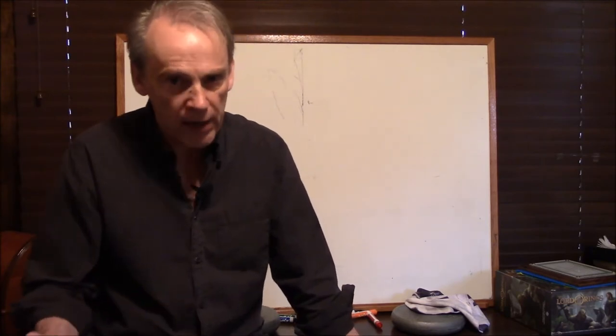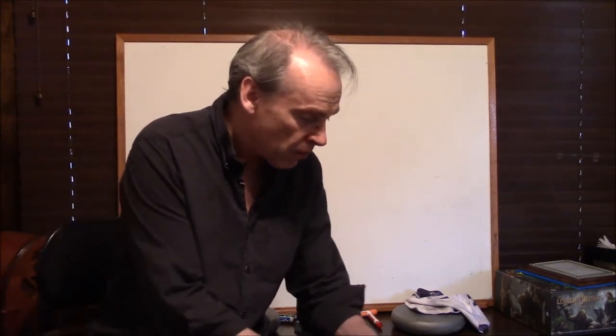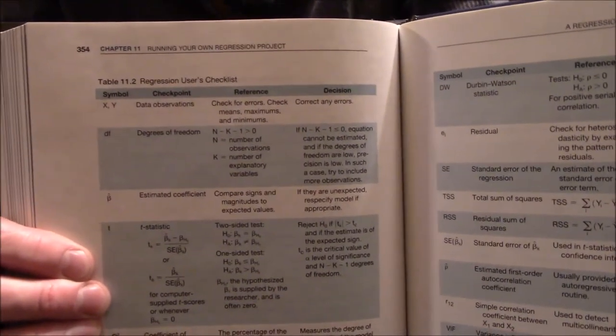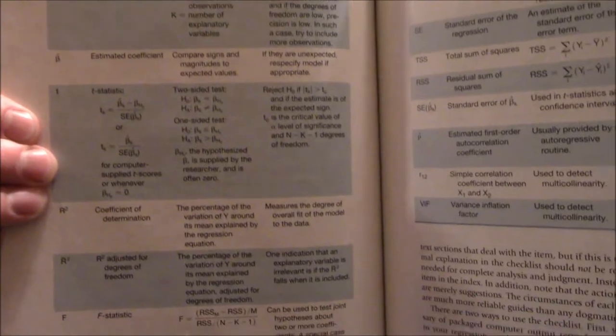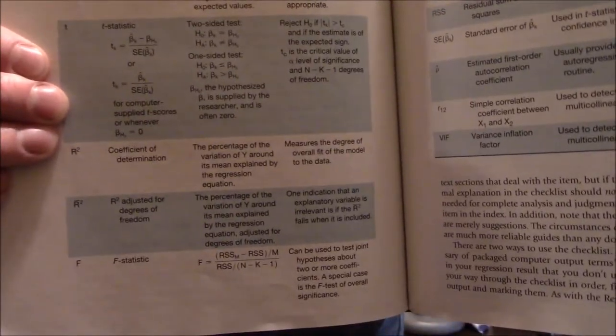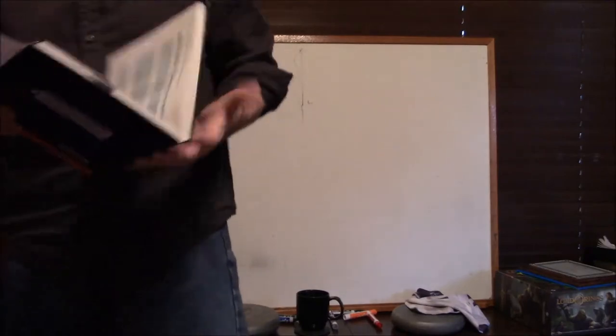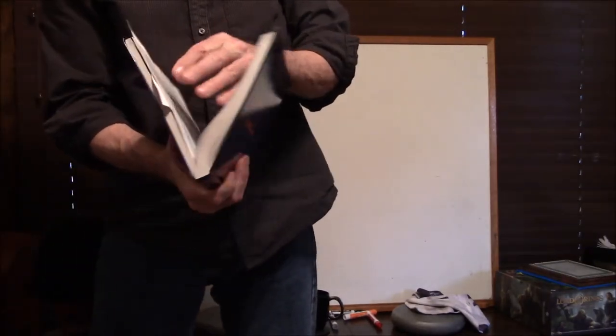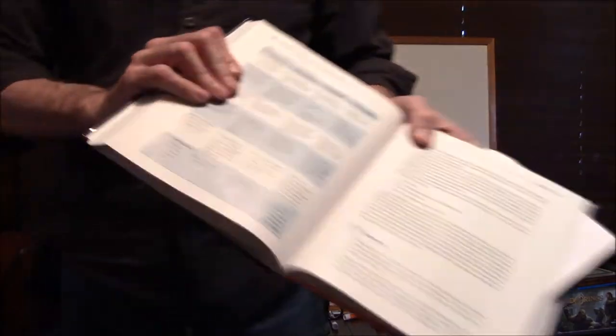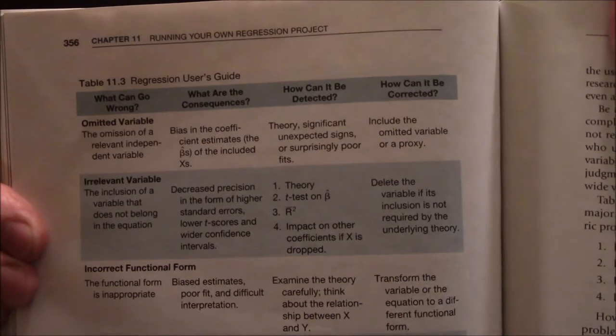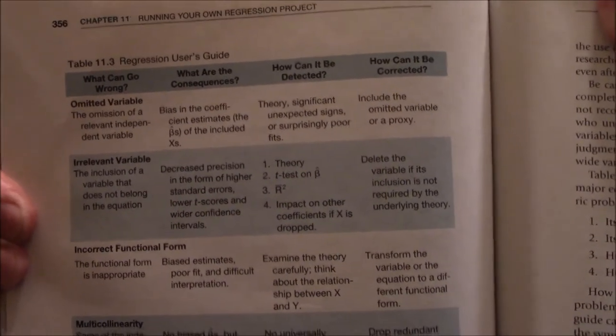I always tell students on the final exam to have those pages marked. It would be an open-book in-class final, so be sure you have this marked. He starts with definitional items — what's the coefficient of determination, what's the adjusted for degrees of freedom, what's the Durbin-Watson statistic, what's the standard error — and then on the next page: what can go wrong, what are the consequences, how can it be detected, how can it be corrected. A whole page of this — extremely useful.